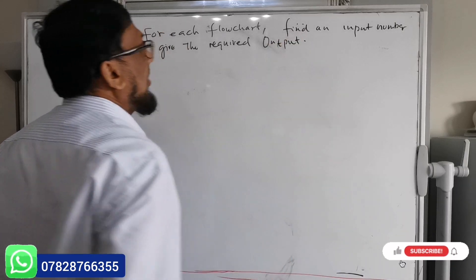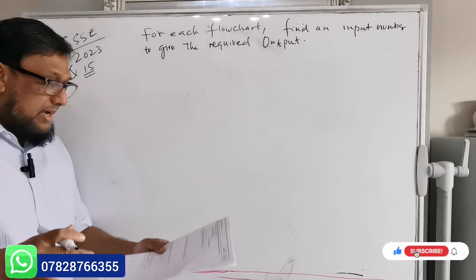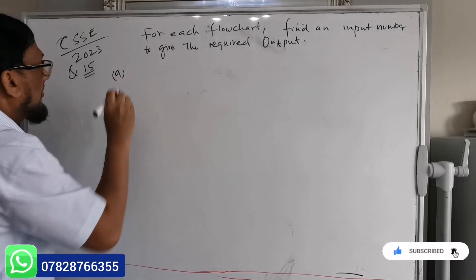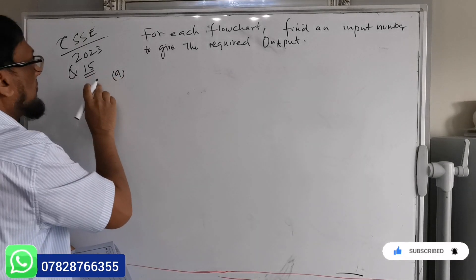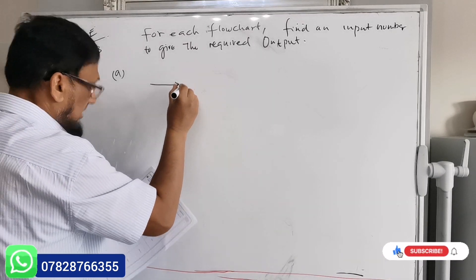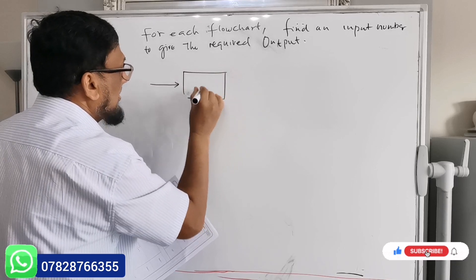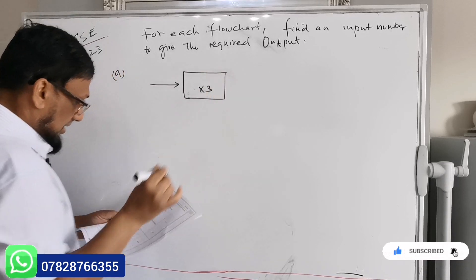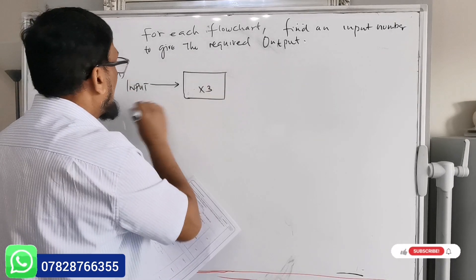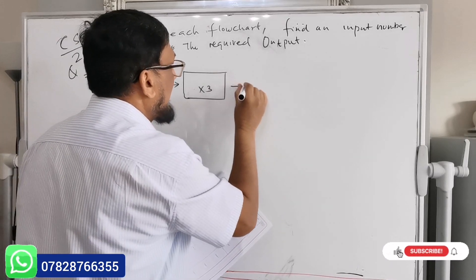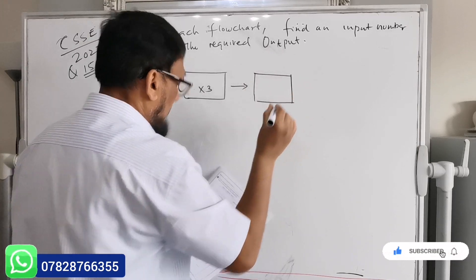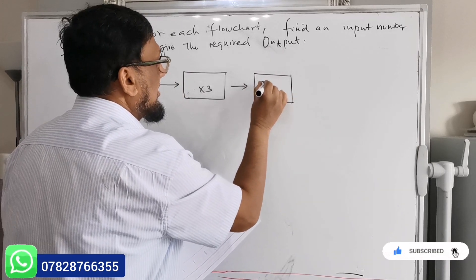They basically give you a flowchart, so I'm going to give you first part A for question number 15. There is an input, and then whatever the input you times by 3, then arrow, then again a box, and what you're going to do is you just square it.